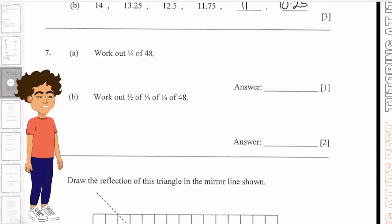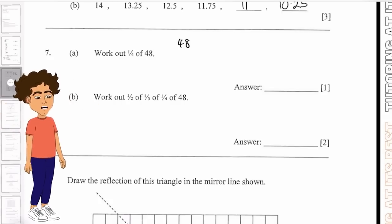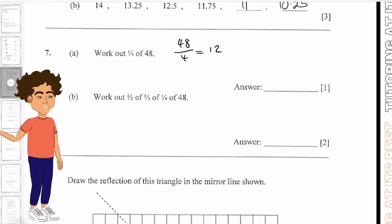Work out 1/4 of 48. There's a two step process here. Always divide by the denominator and times by the numerator. So we have 48 divided by 4, which gives us 12. Because the numerator is 1, we know that the answer is still going to be 12.